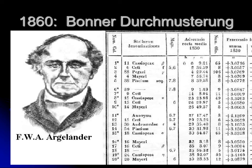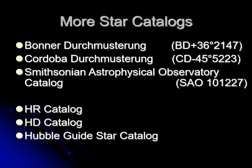Argelander's catalog was called the Bonner Durchmusterung, meaning the star catalog of Bonn, Germany. In it, stars are labeled by the declination angle the telescope is pointed at. The telescope is set at a certain angle, aimed at a particular starting point in the sky, and as the Earth rotates, stars passing by get numbered sequentially. An example name would be BD +36° 2147 — BD for Bonner Durchmusterung, +36° for the telescope angle, and 2147 as the star number. He spent a couple of decades on this work.